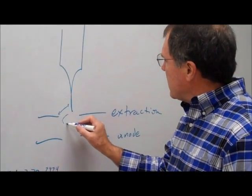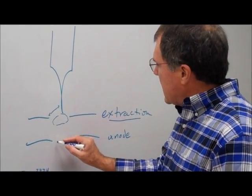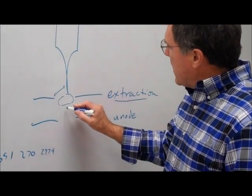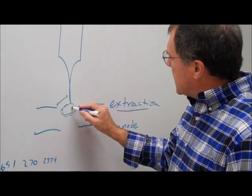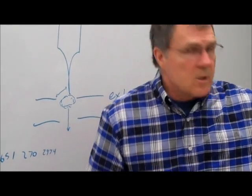And so you'll end up with electrons in the area of this extraction plate, and then this is another plate that's biased, and so the way it works is it takes these electrons and accelerates them down through the column.